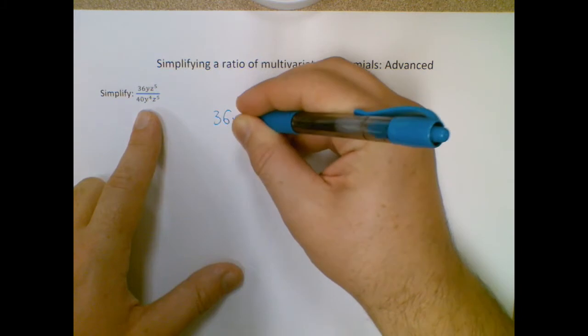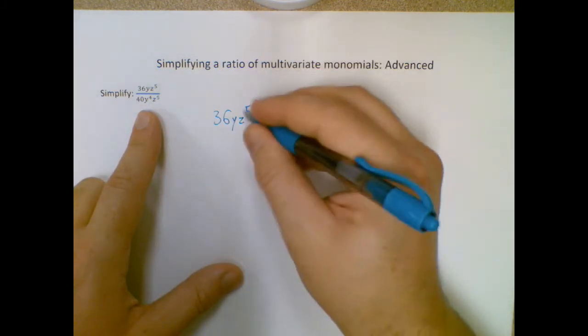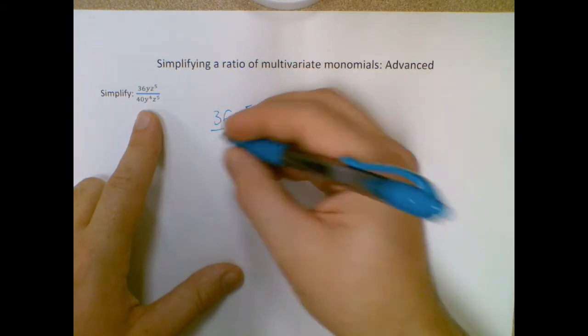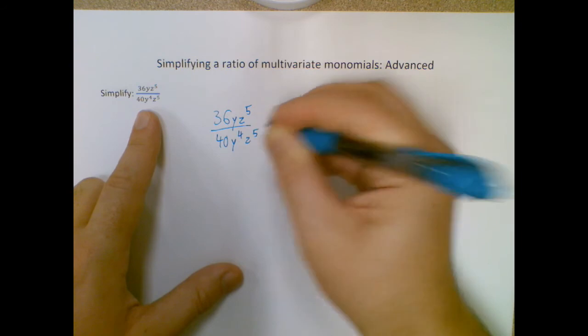I have 36y times z to the 5th, and remember that 5 is only on the z because there's no parentheses, and 40y to the 4th, z to the 5th.